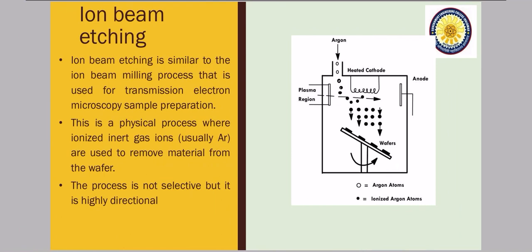In ion beam etching, it is very similar to the ion beam milling process, which is used for transmission electron microscopy sample preparation. It is a physical process where ionized inert gas — for example, argon — is used to remove material from the wafer. As you can see in the diagram, argon gas comes in and through plasma is created. The argon neutral gas is converted into ions, and these ions come onto your wafer and react with the unwanted layer, taking byproducts which are removed.